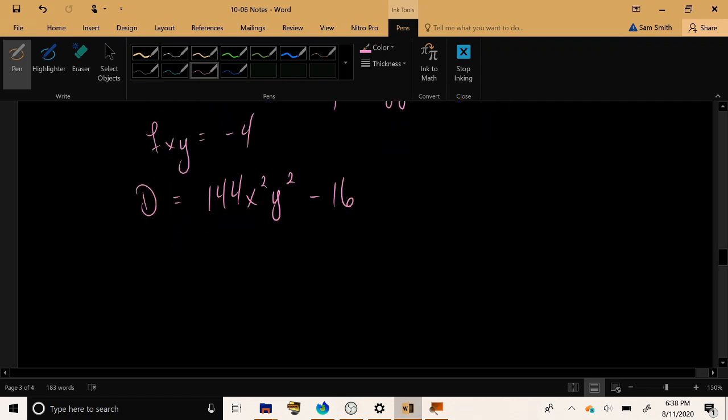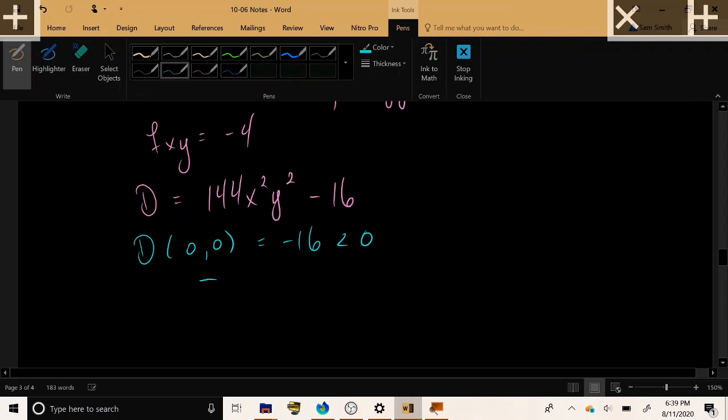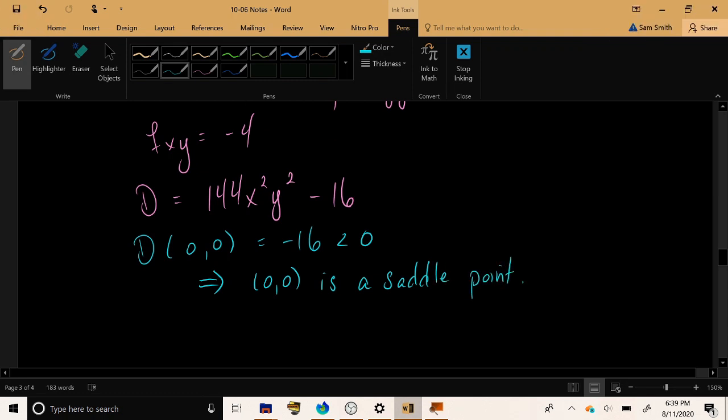So next step, and yes, these questions really are this long, is to go through one by one and start plugging in our critical points to classify them. D(0, 0) is equal to 144 times 0 squared times 0 squared, minus 16. And that's negative. Since we got a negative determinant, the second derivative test tells us that the point (0, 0) is a saddle point. So it's not quite a local min, nor is it quite a local max. It's sort of a fusion of the two.